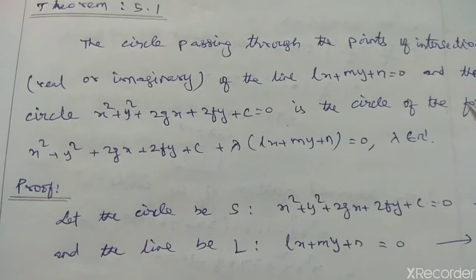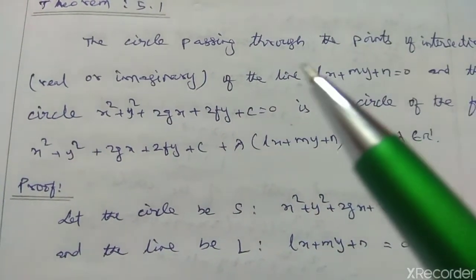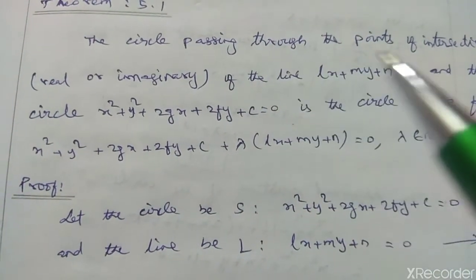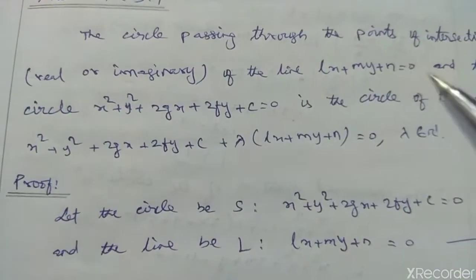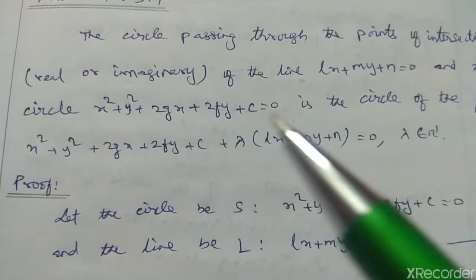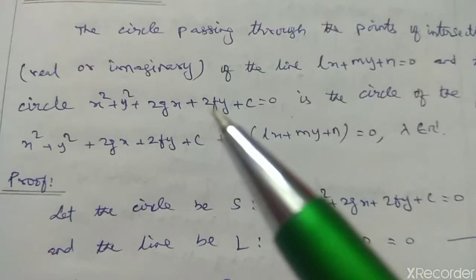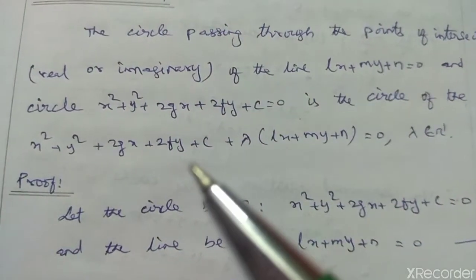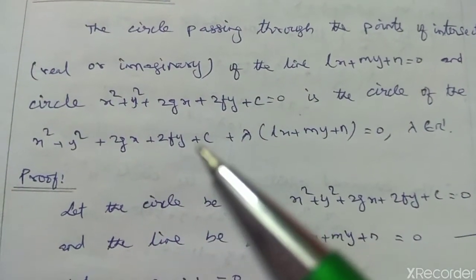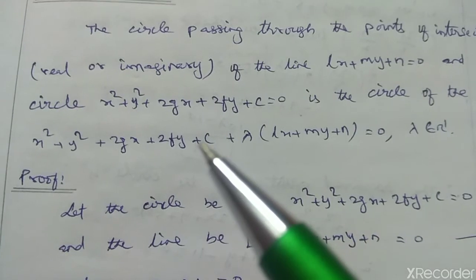Working. The equation represents a circle passing through the intersection of the line and the circle. When finding the intersection of the line and circle, we use this general equation form.